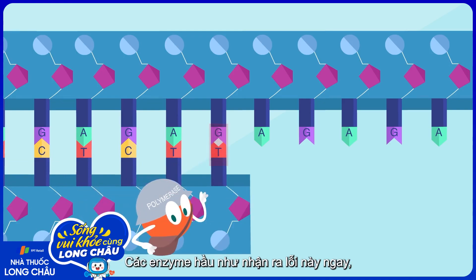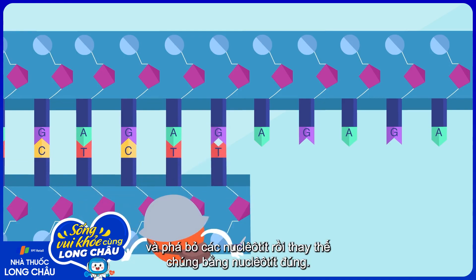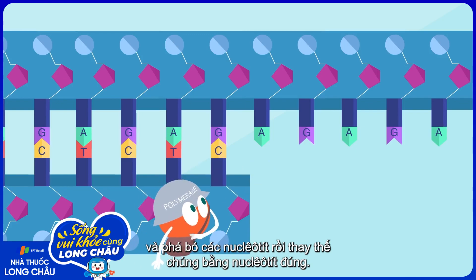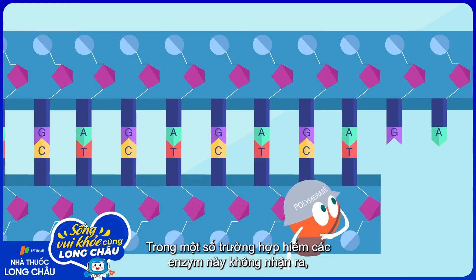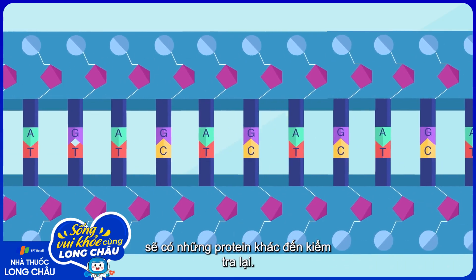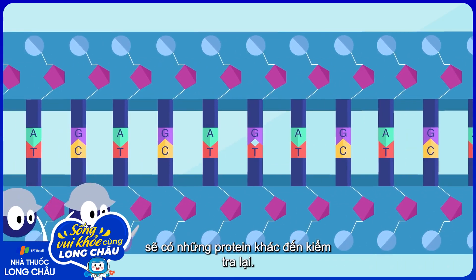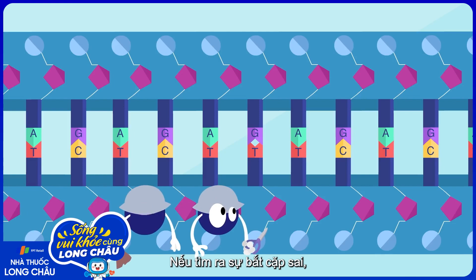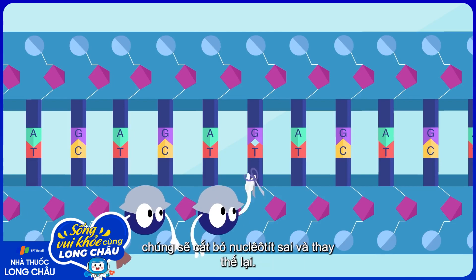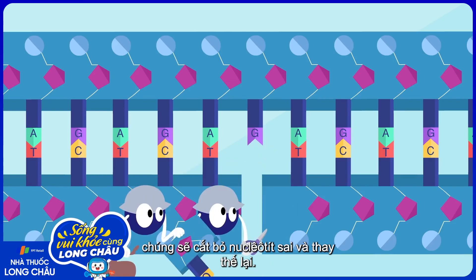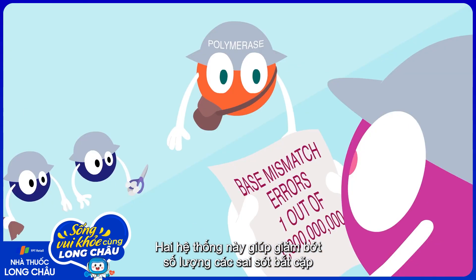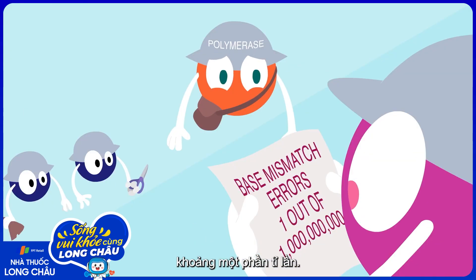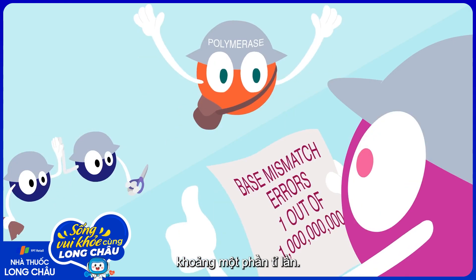The enzyme catches most of these right away, and cuts off a few nucleotides and replaces them with the correct ones. And just in case it missed a few, a second set of proteins comes behind it to check. If they find a mismatch, they cut out the incorrect nucleotide and replace it. This is called mismatch repair. Together, these two systems reduce the number of base mismatch errors to about one in one billion.